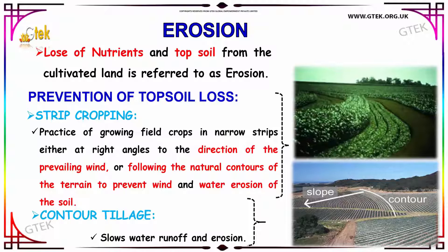Strip cropping is done either at right angles to the direction of the prevailing wind or following the natural contours of the terrain, to prevent wind and water erosion of the soil. Another method is contour cropping, which slows water runoff and erosion — you can see this is the contour cropping, it looks like a slope. The fast flow of water is slowed down by the slope, so soil erosion is avoided.